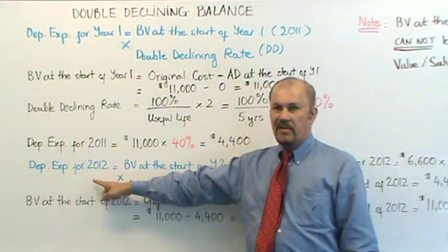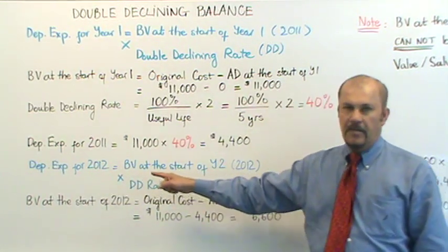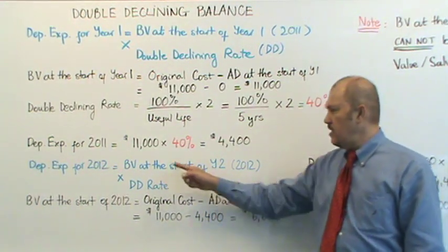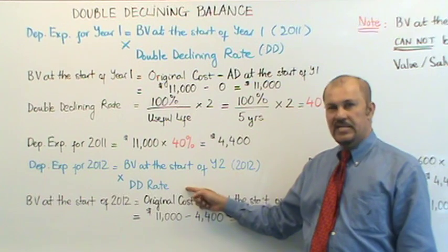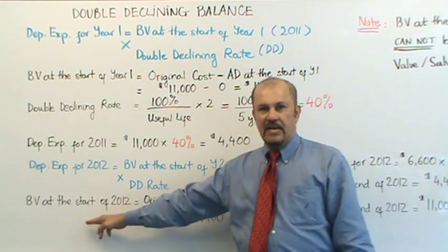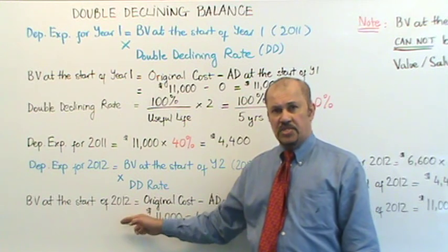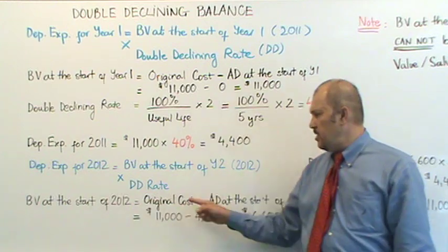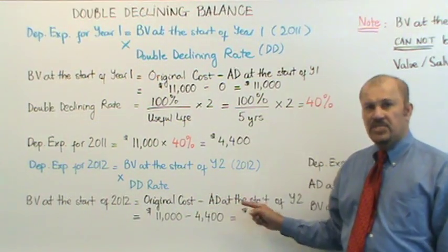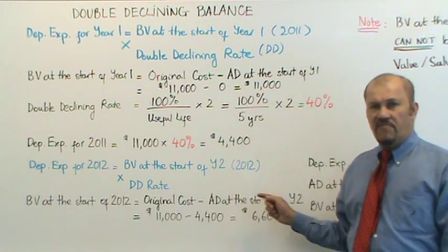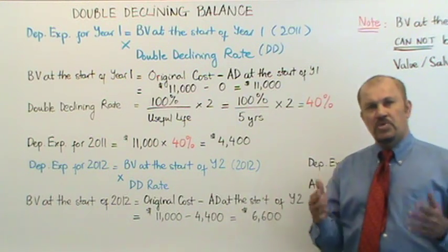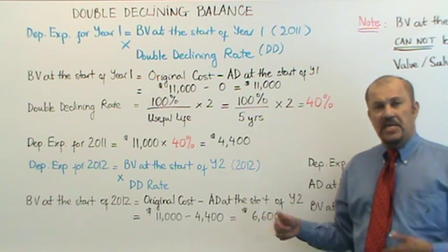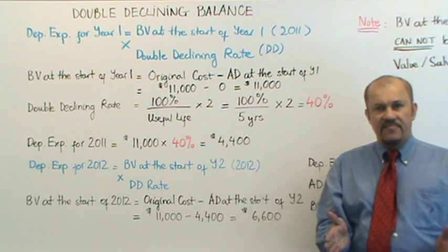Next, we are going to calculate the depreciation expense for 2012. The formula again would be book value at the start of year two, which is 2012, multiplied by the double declining rate. So let's calculate the book value at the start of 2012. The book value at the start of 2012, year two, is equal to your original cost minus accumulated depreciation at the start of 2012. Your AD at the start of 2012, at the start of year two, is the same as your AD at the end of year one.